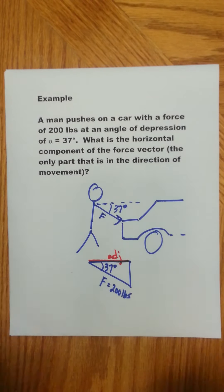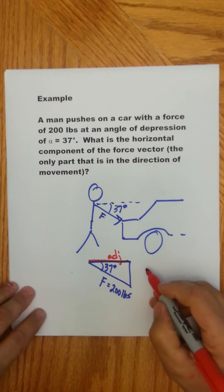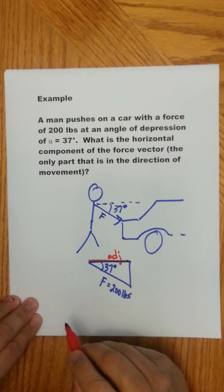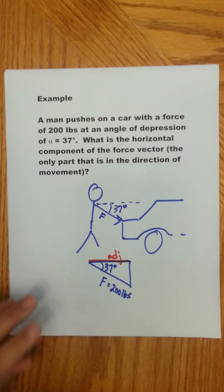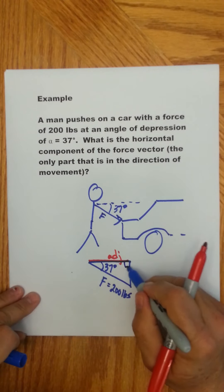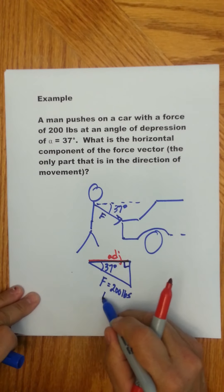So we're back to our regular trigonometric ratios. This is the adjacent, here's my right angle, and this is my hypotenuse.